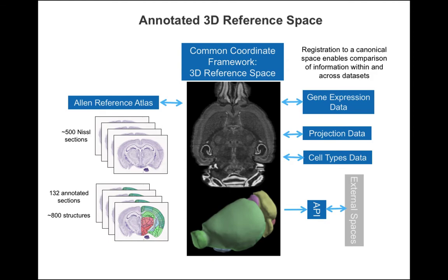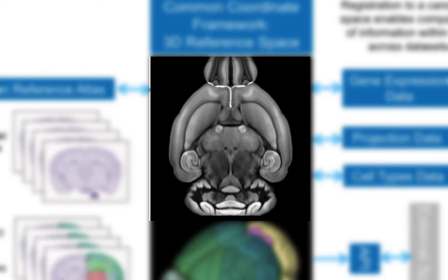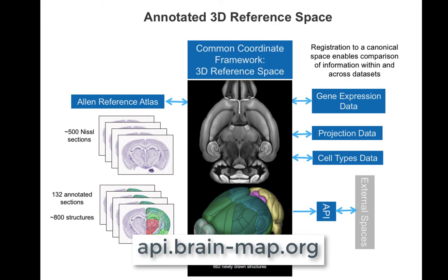In 2011, the reference atlas was digitally upgraded, more deeply annotated, and made symmetrical so as to better locate gene expression with structure. With the advent of more precisely located data from the neuronal projection and cell typing projects, the reference space was again upgraded. In 2015, the Allen Institute published a new reference space created from an average of almost 1,700 imaged brains. In 2017, anatomists completed drawing almost 700 structures in the three-dimensional planes of this reference brain.